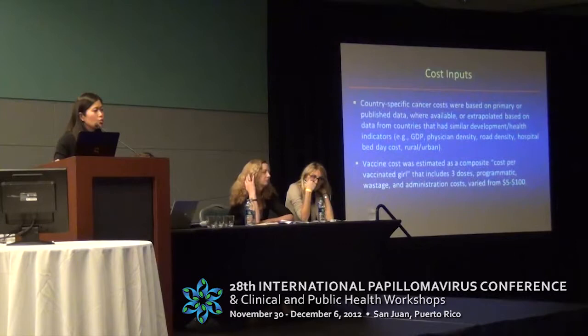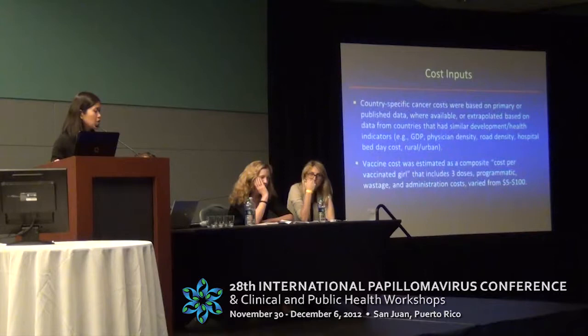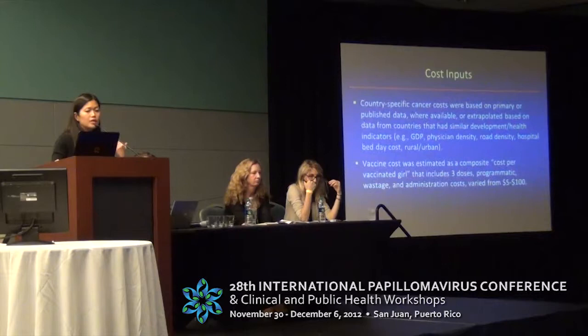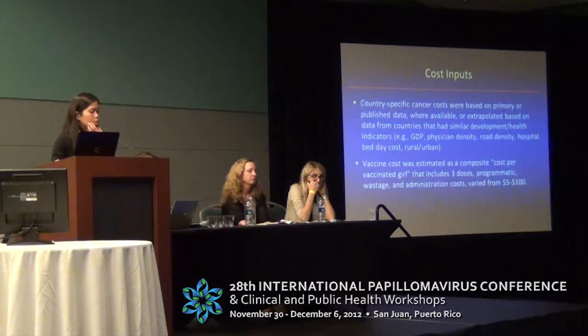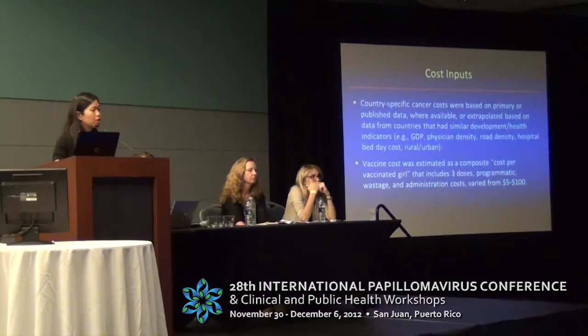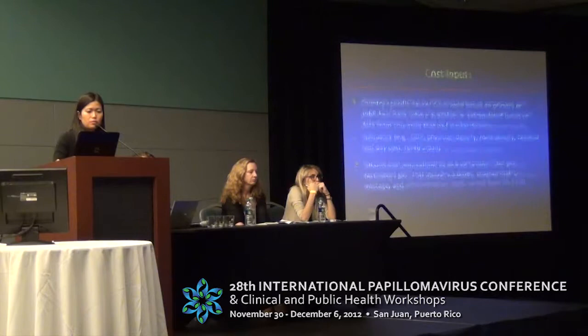The model incorporates direct medical costs of cancer treatment. Country-specific cancer costs were based on primary or published data where available, or extrapolated based on data from countries with similar development health indicators such as GDP, physician density, road density, and rural-urban split. The vaccine cost was bundled as a composite cost per vaccinated girl, inclusive of three doses, programmatic costs, wastage, and administration, and we varied that cost per vaccinated girl from $5 to $100.